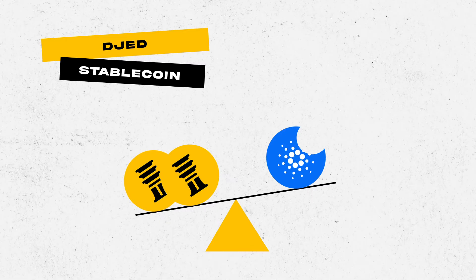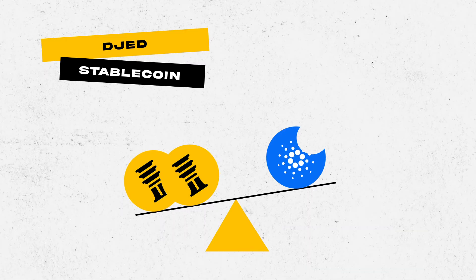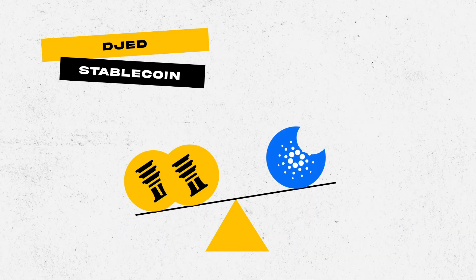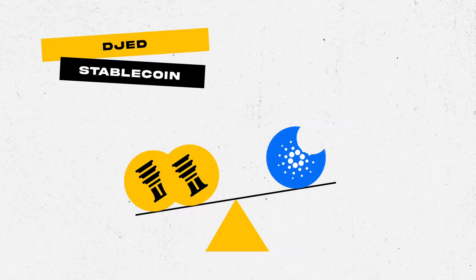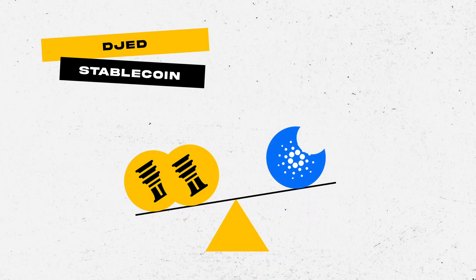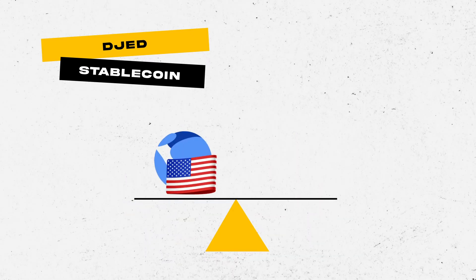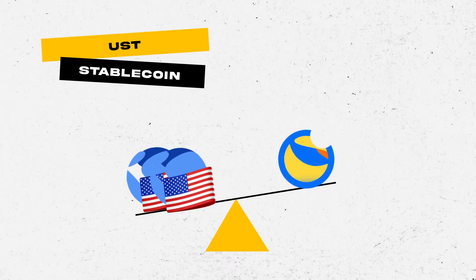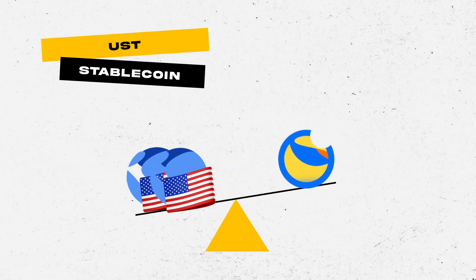In other words, if the supply of the primary currency increases, the supply of the reserve currency decreases, and vice versa. If the supply of D-Jet rises, the supply of ADA drops, and vice versa. Similarly, if the supply of Terra USD increases, the supply of Luna decreases.